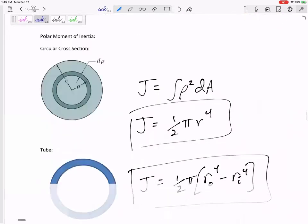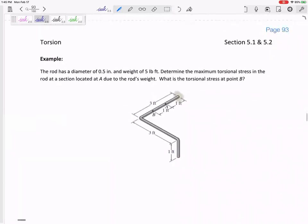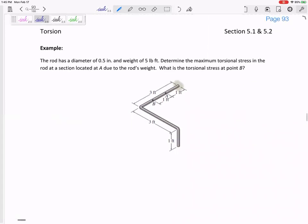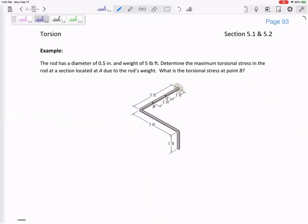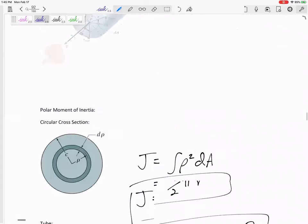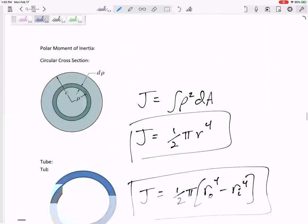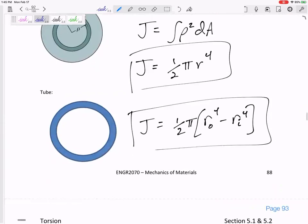I wanted to start, I don't know if we can do this. Let's set this up for next class. So the main thing about this, tau is TR over J, and J is one half pi R to the fourth power.